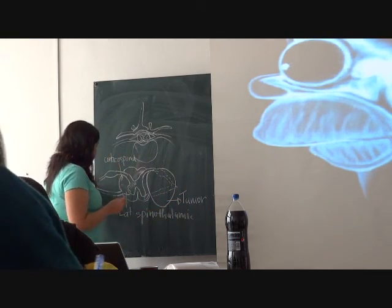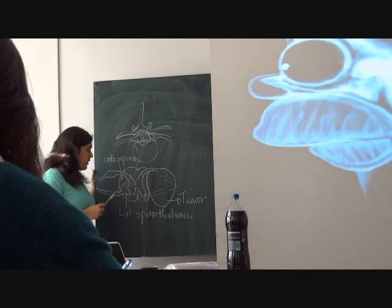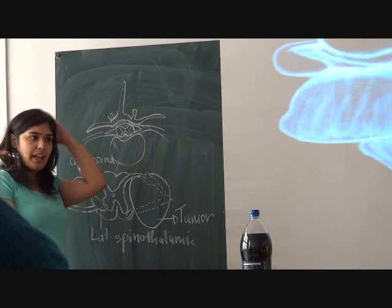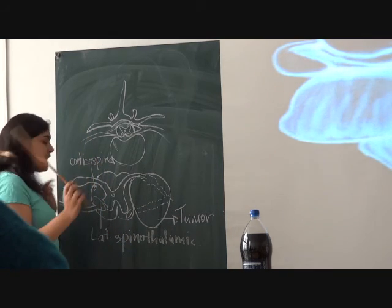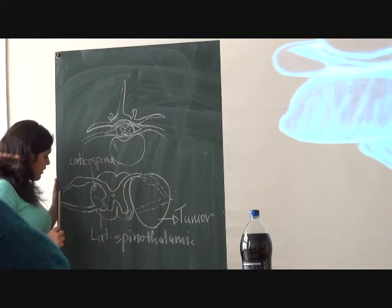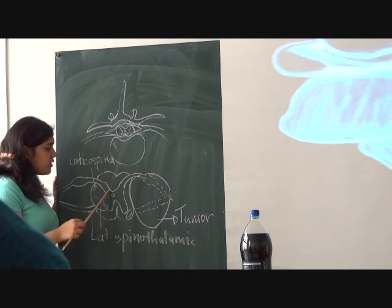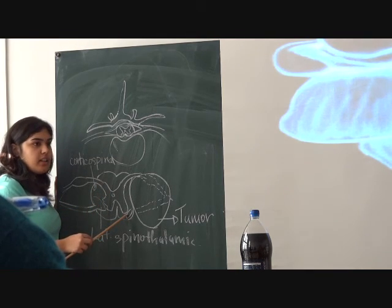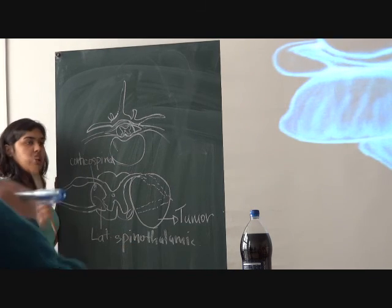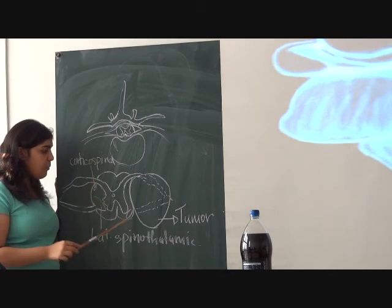Spinothalamic tract — sensation comes from which root of the spinal cord? Posterior. This is the dorsal root ganglia, which is involved in sensation. Sensation travels from the skin to the brain; motor is from the brain to the muscle. The first neuron is from the peripheral nerves. The sensation comes in, enters into the posterior spinal root, into the dorsal root column, then crosses over at the level of the spinal cord. The spinothalamic tract does not cross in the medulla — it always crosses to the opposite side in the spinal cord itself.